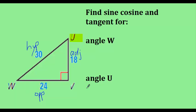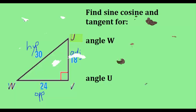So the sine of angle U is opposite over hypotenuse: 24 over 30. The cosine is adjacent over hypotenuse: 18 over 30. And the tangent is 24 over 18. So it matters a lot which angle you're looking at.